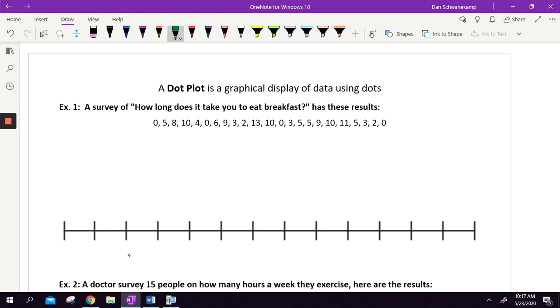You took a survey: how long does it take you to eat breakfast? You have your students or friends write those numbers or send you a text message. If you wanted to get a quick visualization of this, you can make a dot plot. What I would do here is I would look at the numbers. I'm going from 0 to 13. So 0, 1, 2, 3, 4, 5, 6, 7, 8, 9, 10, 11, 12, 13. So we made a quick number line. We marked each thing.